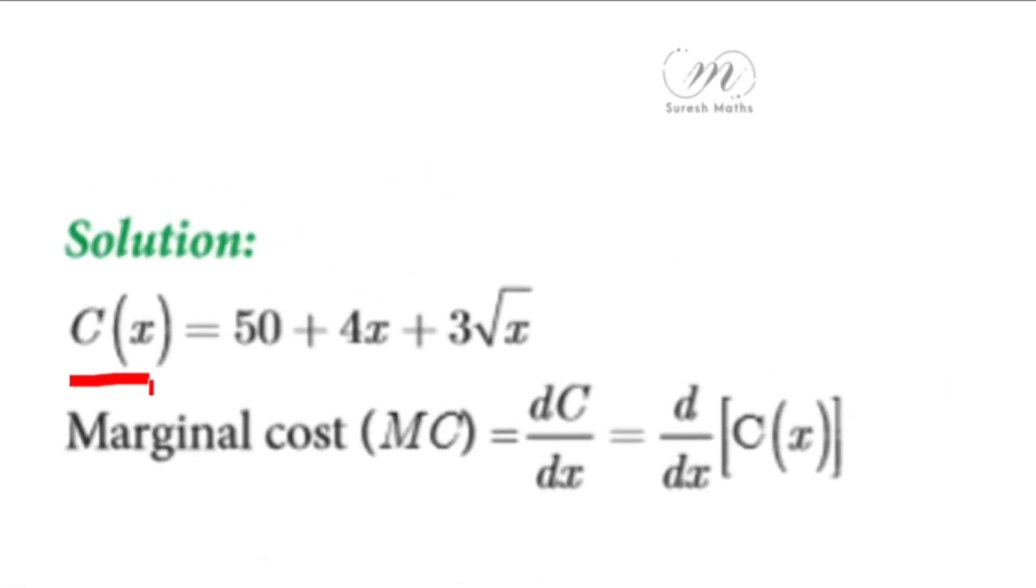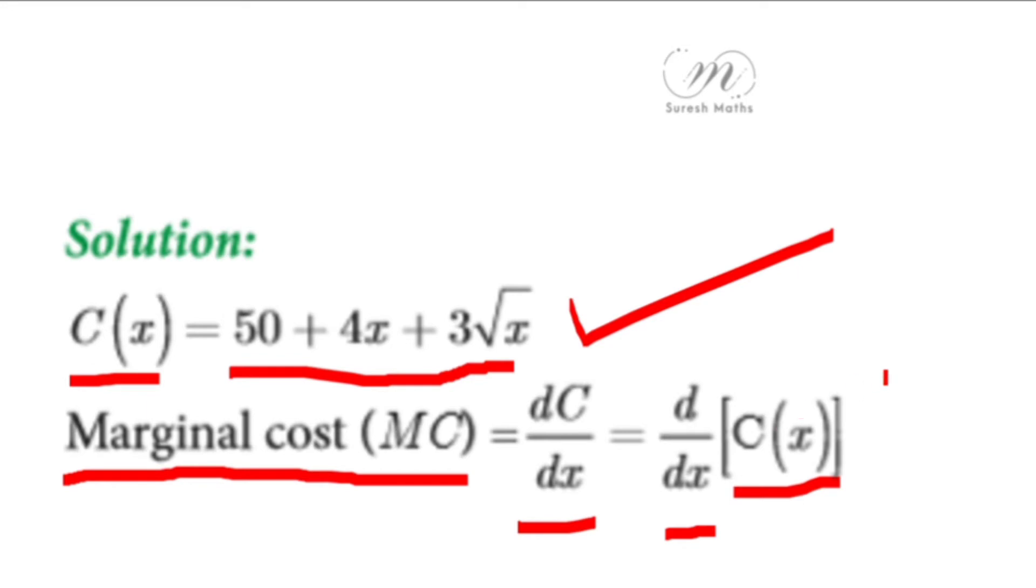C(x) is given as 50 + 4x + 3√x in Rupees. Marginal cost MC means the marginal cost function is dC/dx - that is, the given cost function C(x) differentiated with respect to x. MC = dC/dx is a very important formula.